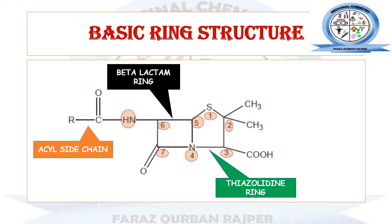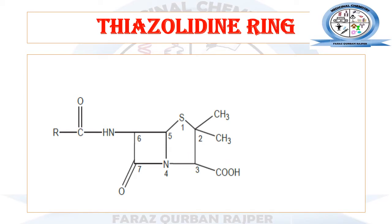The basic substitution site in the penicillin ring structure is the six acyl amino side chain. Besides this, we can modify certain other regions of the beta-lactam ring and the thiazolidine ring, but modifications there will ultimately retard or sometimes enhance the effect of penicillin. Let's first consider the thiazolidine ring — the five-membered heterocyclic ring region.